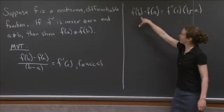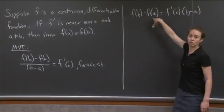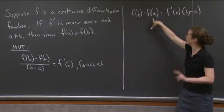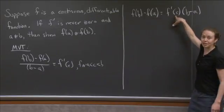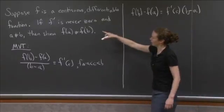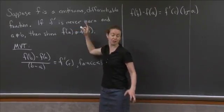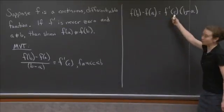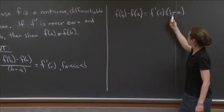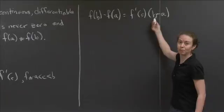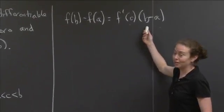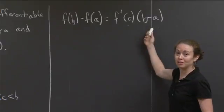So we get f'(c) times (b minus a). Now, we just want to show again that f(b) minus f(a) cannot be zero. What do we know? We know two things. We know f'(c) is not zero—that was given to you. f' is never zero, so certainly at any fixed value, f'(c) is not zero. So we know this term is not zero. We also know that b is not equal to a, so we know b minus a is not zero.